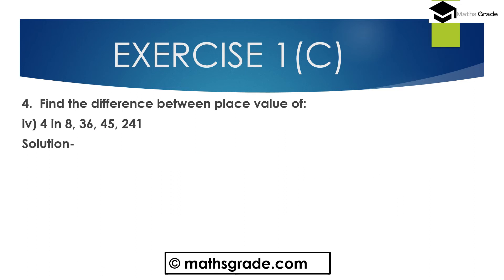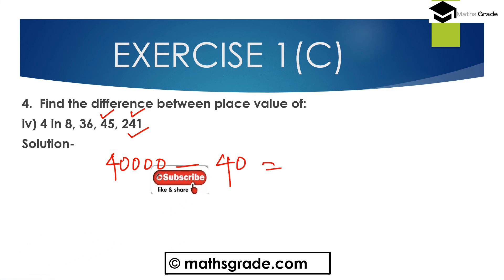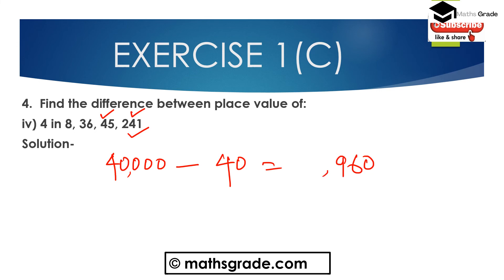Part 4: find the difference between the place values of 4 in 8,36,45,241. The first digit 4 is in the ten-thousands place, so its place value is 40,000. The second digit 4 is in the tens place, so its place value is 40. Therefore, 40,000 minus 40 equals 39,960. The difference between the place values of 4 in 8,36,45,241 is 39,960.